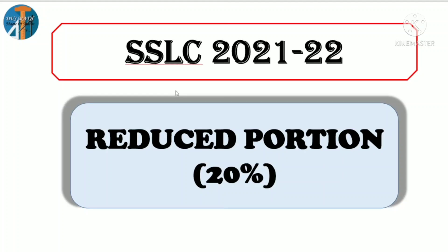In March, 20% is reduced. This lesson is completed in March. So this is the 1st batch of SSLC 21-22. Compared to last year, 30% is reduced in March.